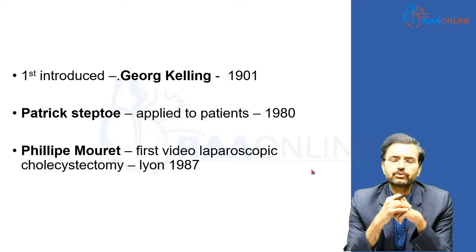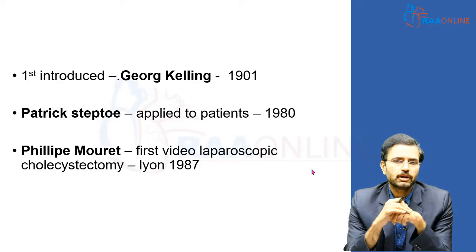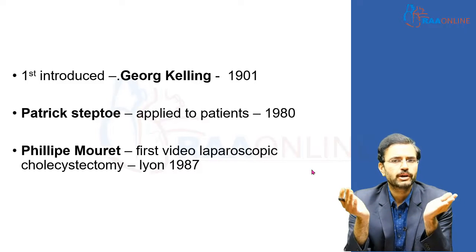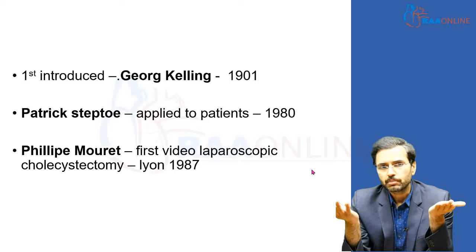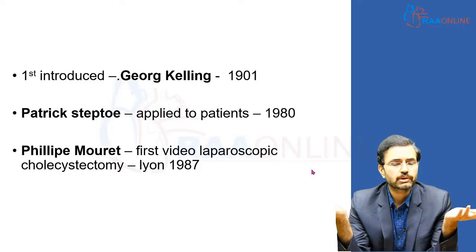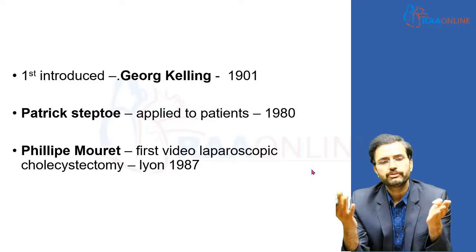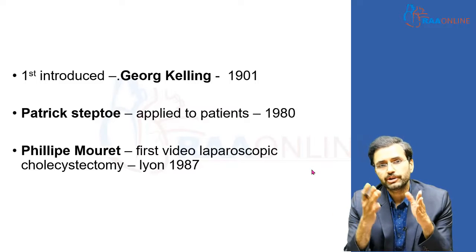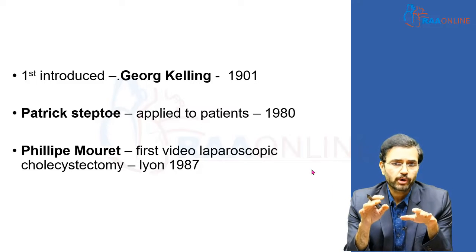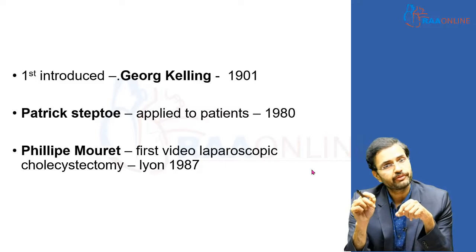The concept of laparoscopic surgery was first proposed by George Kelling way back in 1901, but he did it on experimental animals and called it celioscopy — celio meaning body cavity, so celioscopy is placing a tube within a body cavity to visualize internal structures. It took 79 years for Patrick Steptoe to introduce it to human patients in the UK, and Philip Mouret performed the first video laparoscopic cholecystectomy in 1987 in Lyon, France.